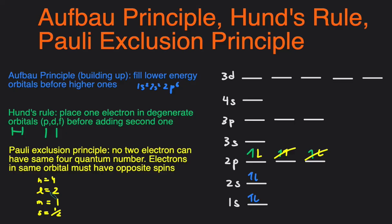So those are what Aufbau Principle, Hund's Rule, and Pauli Exclusion Principle are. Hopefully that video helped clarify these concepts and made it easier to understand.